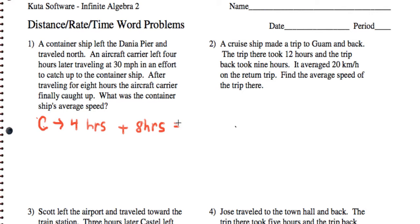So the container ship is traveling for 12 hours total. Now the aircraft carrier is traveling for, well, it waits four hours, so it's not traveling at all for the first four hours, and then it moves for eight hours, and that's the time, and the rate it goes at is 30 miles per hour.